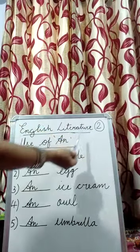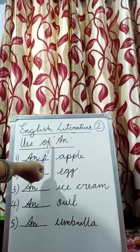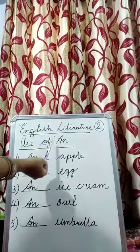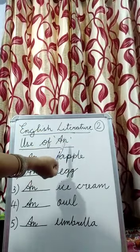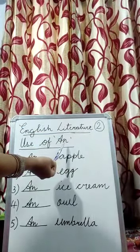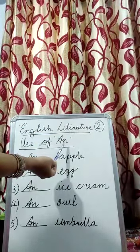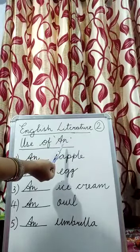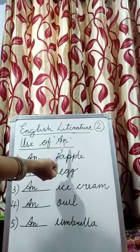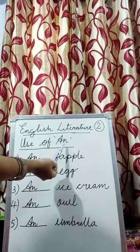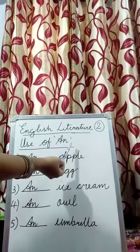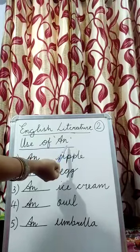Children, do you remember my previous video where I have taught you use of A or AN? Can you tell me where do we use AN? We use AN before vowels. And what are vowels? A, E, I, O, U are called vowels.